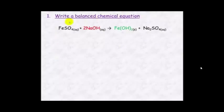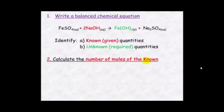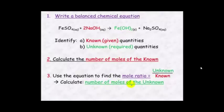The first step with stoichiometry is to write your balanced equation so that you can find the mole ratios. Using the information given, you identify the species you know about — called the known — and the species you're trying to find — the unknown. You calculate the number of moles of the known using the information given, then use the mole ratio to determine the number of moles of the unknown.